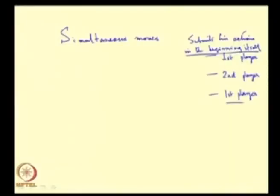Similarly, player 1's action in stage three is committed at the beginning of the game itself. So even if that action is not optimal given what player 2 chose in stage two, player 1 must stick to his decision. This is one way of justifying simultaneous move games — it basically takes away the sequential nature of the game. It makes the game a simultaneous move game, because actions are taken without taking into cognizance the actions of other players.